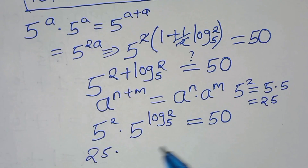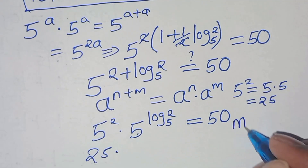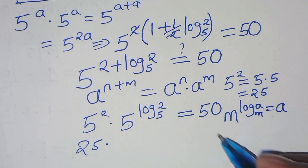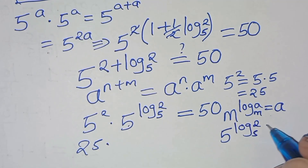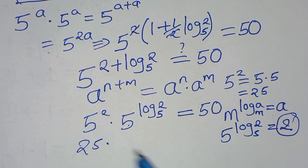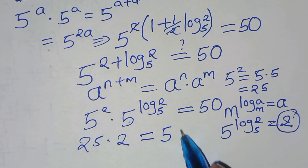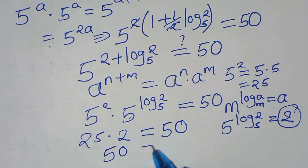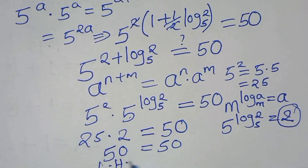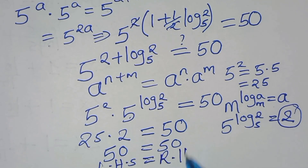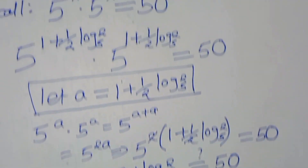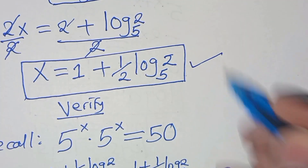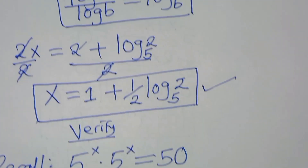So we have 25 times 5 to the power log base 5 of 2. This is in the form m to the power log base m of a, which equals a. So 5 to the power log base 5 of 2 equals 2. Substituting, we get 25 times 2, which equals 50, and this is equal to 50. The left-hand side equals the right-hand side, confirming that the value of x equals 1 plus one-half·log base 5 of 2 satisfies the equation. Please like this video and subscribe.